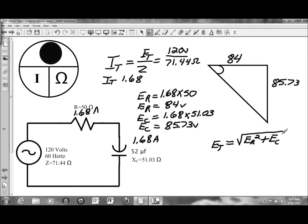Just applying Pythagorean's theorem. So that'll be 84 squared plus 85.73 volts squared. And then the square root of the combination of those two comes out to be 120 volts. And we have built the voltage triangle for a series RC circuit.